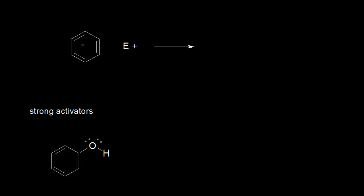The benzene ring is going to function as a nucleophile. All of the pi electrons in the benzene ring are negatively charged, and they're attracted to positively charged things, like an electrophile. Some of these pi electrons are going to form a bond with our electrophile — nucleophile attacking the electrophile — and the electrophile adds on to our ring. The electrophile adds on to this carbon right here, which means that this carbon has a +1 formal charge. That represents our positively charged sigma complex.